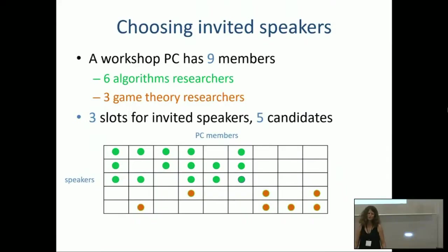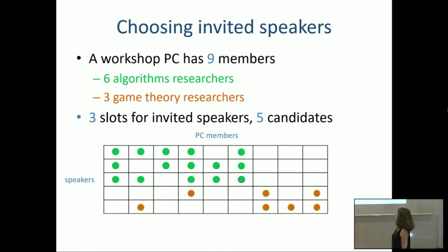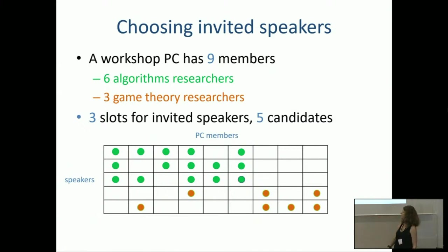Let me start with a warm-up example. Suppose you're organizing a smallish workshop with just nine PC members: six work in algorithms, three work in game theory — an algorithmic game theory workshop. It's a three-day workshop, so you want to select one invited speaker for each day. You ask your PC members which invited speaker they'd want to see. You have five invited speaker candidates and nine PC members. The first PC member says they want to see speakers one, two, and three, but not the other two.